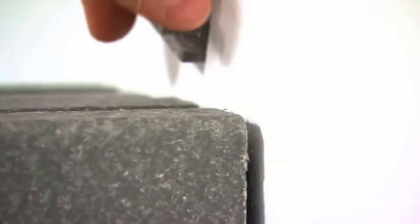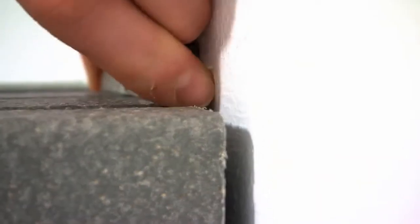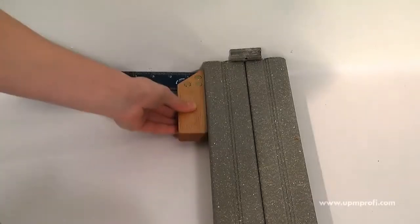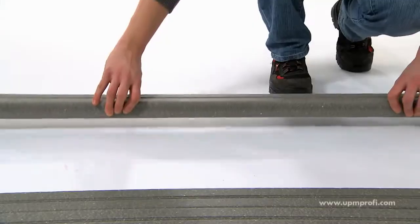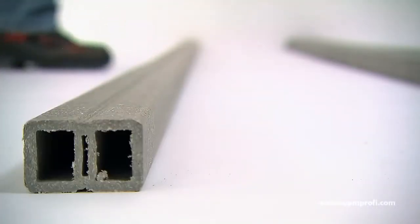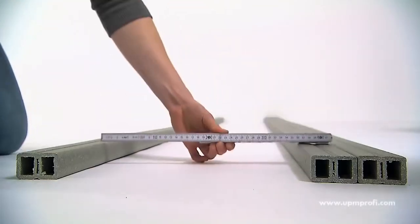Use UPM Profi T-clips as spacers for the expansion gaps at both ends of the boards. UPM Profi support rails should be aligned to create a 90 degree angle, and the spacing between parallel support rails should never exceed 40 centimeters.